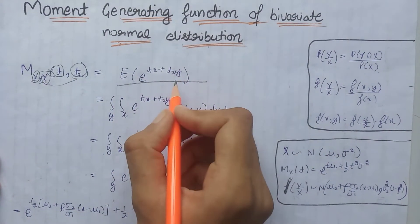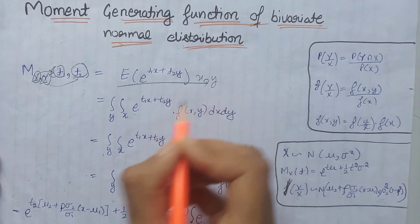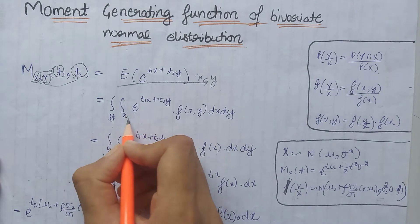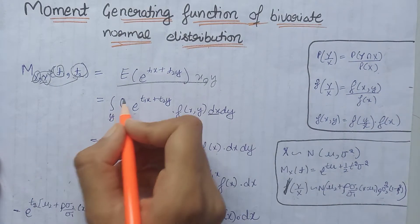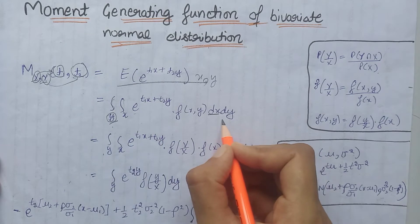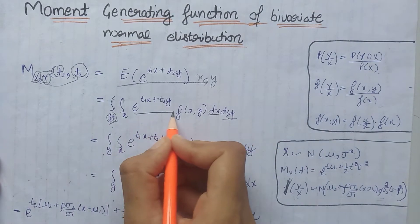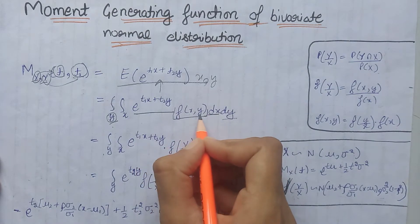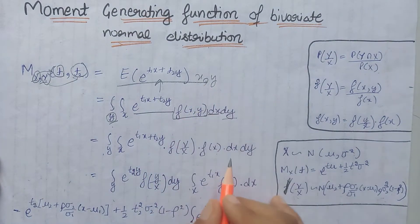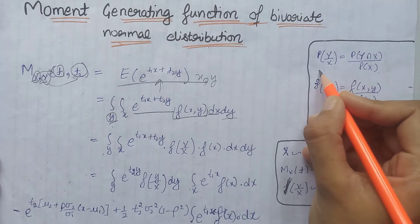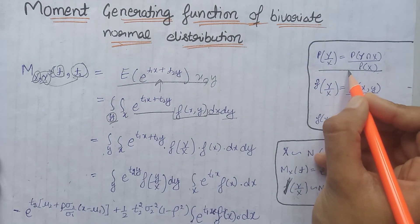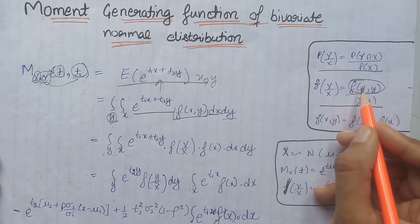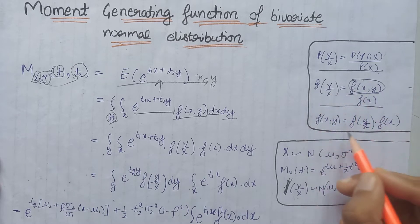Since we are using two variables x and y, we will write two integrals. The first integral is over all values of x with respect to dx, and the second integral is over all values of y with respect to dy. Inside, we write the term from the expectation multiplied by the joint PDF of x and y. Using the probability formula applied to the PDF, the joint PDF of x and y equals the conditional PDF of y given x, multiplied by the marginal PDF of x.